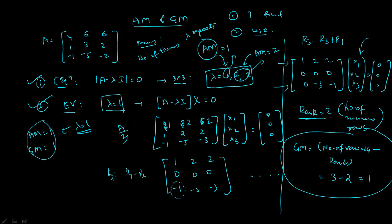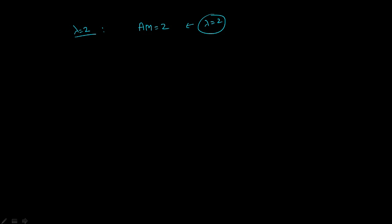Now for lambda equal to 2, you have to find the respective eigenvector and do the further calculation. You will find that AM is 2 because lambda equal to 2 is repeated 2 times in the characteristic equation. After doing the same row reduction procedure with 3 variables, you will find that the rank is 2, giving a geometric multiplicity GM of 1. So AM is not equal to GM for lambda equal to 2.